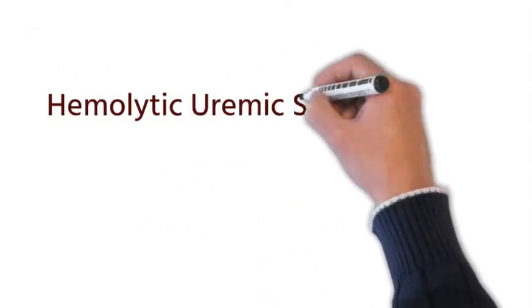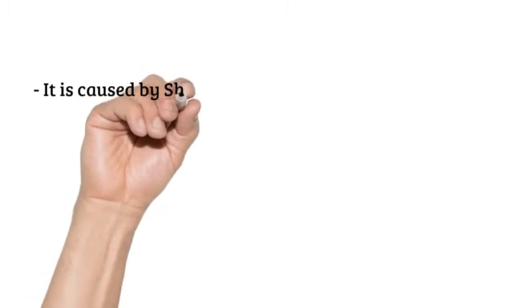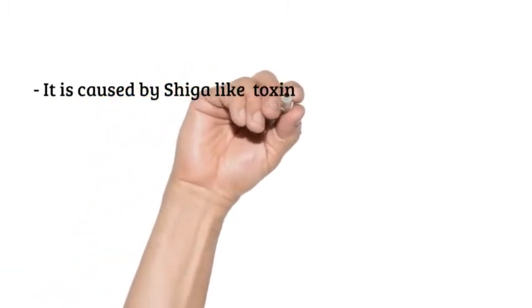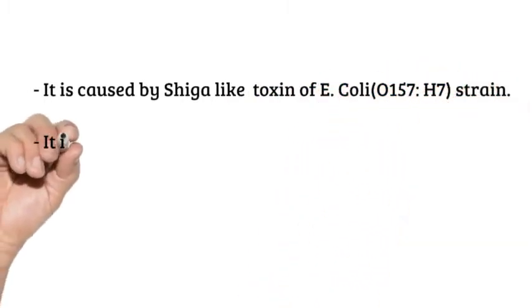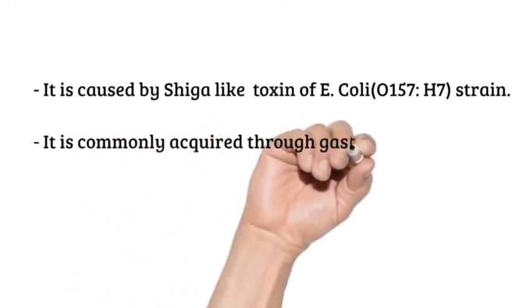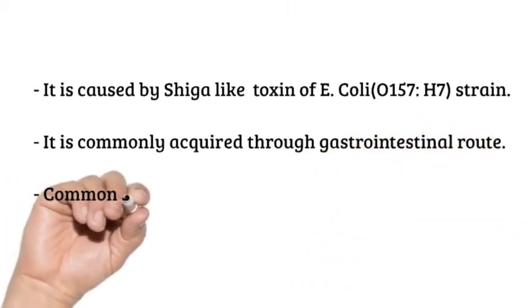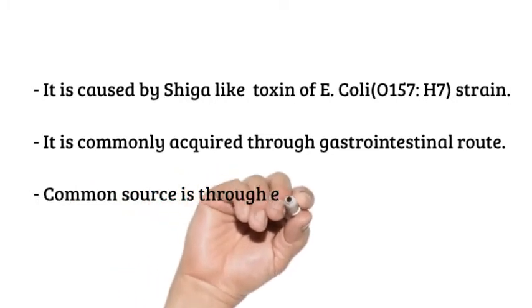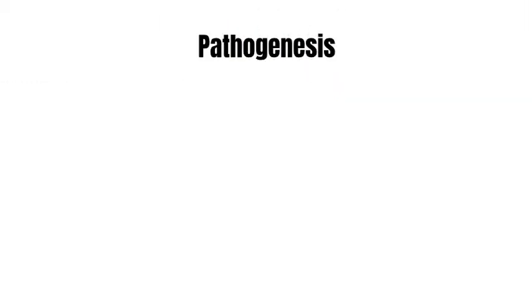In this video we will briefly talk about Hemolytic Uremic Syndrome. Hemolytic Uremic Syndrome, or HUS, is caused by Shiga-like toxin of Escherichia coli O157:H7 strain, and it is commonly acquired through eating contaminated food via the gastrointestinal route. The common food that is implicated is undercooked hamburger, so it is also known as hamburger disease.